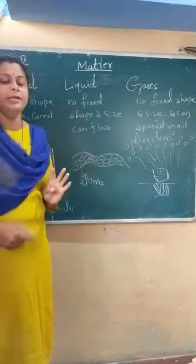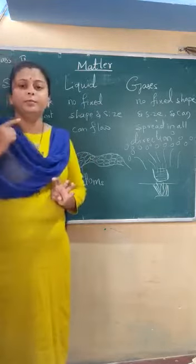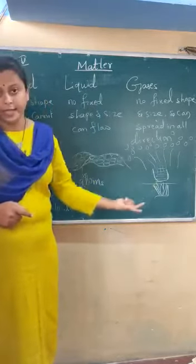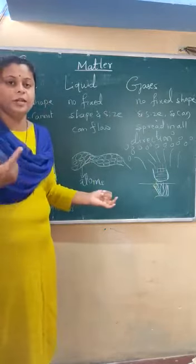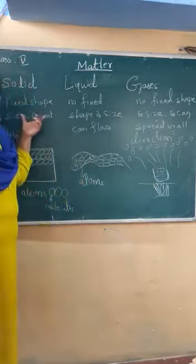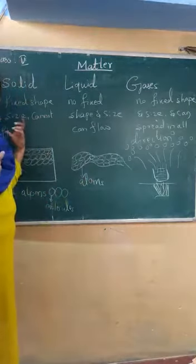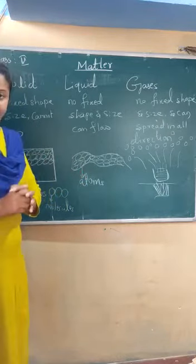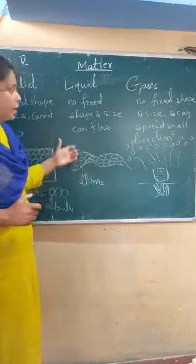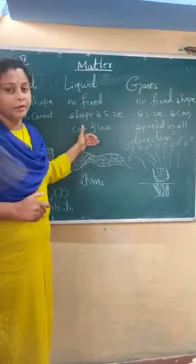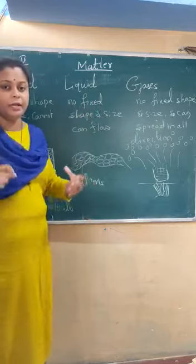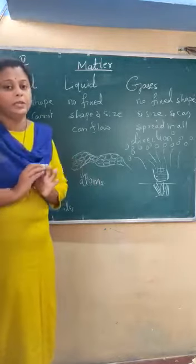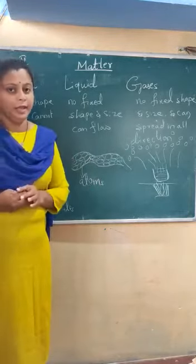Write down the three forms of matter with examples. The second question is: write down the properties of solid, liquid and gases. For solid — it has fixed shape and size, cannot flow in any direction, and atoms are bounded very tightly. For liquid — no fixed shape or size, it can flow downward and to the sides of the container, and atoms are bounded loosely. Write three points for each.